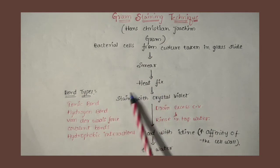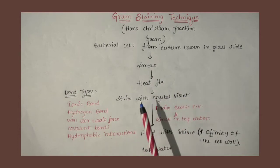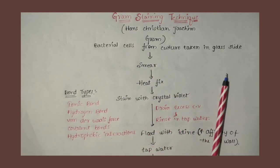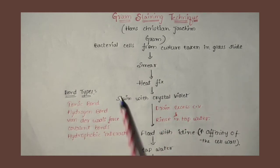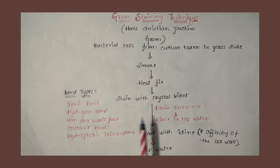These bonds are ionic bonds, hydrogen bonds, van der Waals forces, covalent bonds, and hydrophobic interactions. This bonding interaction occurs between peptidoglycan layer and crystal violet in gram positive bacteria.